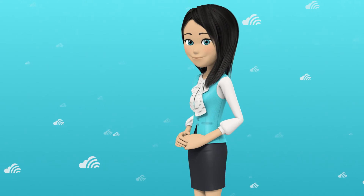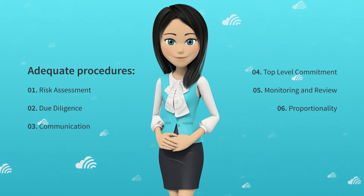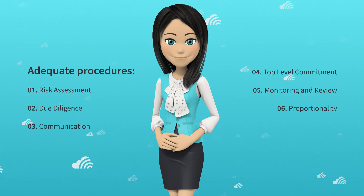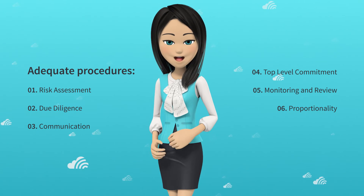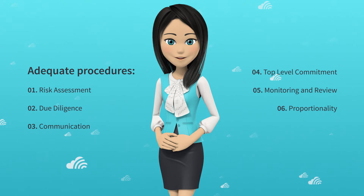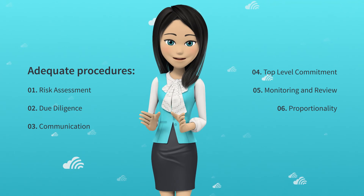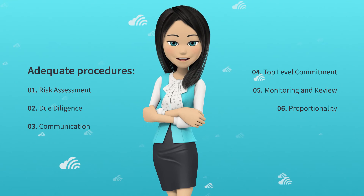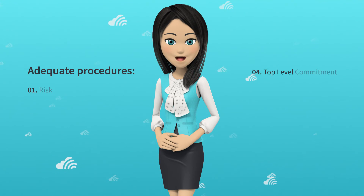Top-level commitment — people at all levels in the company are involved in this commitment to keep Skyscanner a bribery-free zone. Monitoring and review — the strategy around anti-bribery is revisited frequently to make sure that it is implemented effectively and accurately. Proportionality — the procedures are proportional to the business they are seeking to protect.